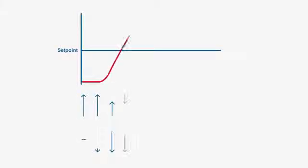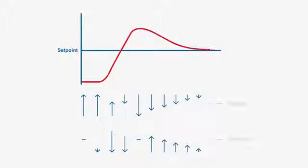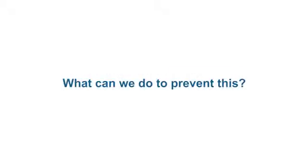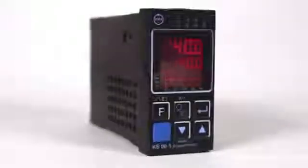This is where we need derivative action. Derivative works on the rate of change in the process, either reducing or increasing the power if the process is rising or falling rapidly. Derivative action is not affected by where the process is or what the control deviation error is — it is only affected by the movement of the process and its rate of change over time. Derivative action can be combined with proportional control to create a PD controller, or combined with integral as well to create a full PID controller.